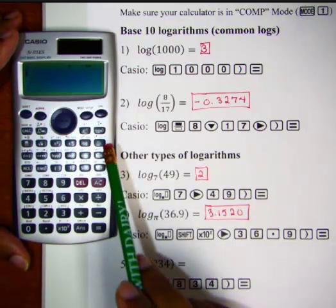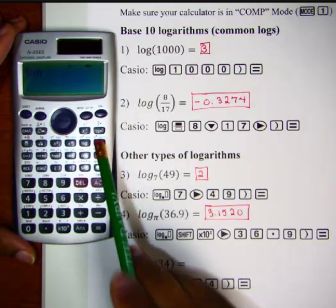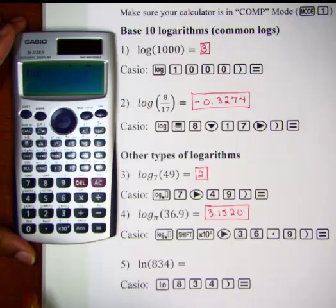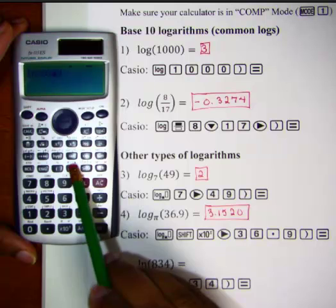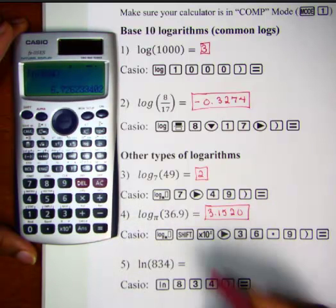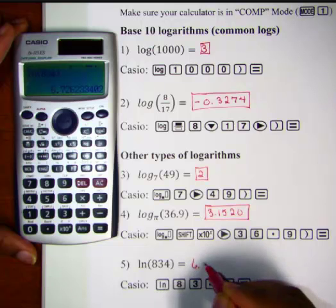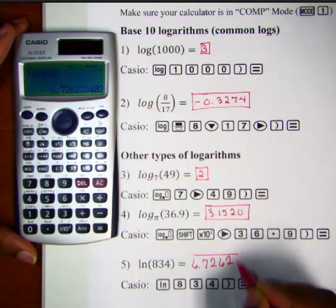So we select natural log, and we enter in 834, close parenthesis, equals, and we get 6.7262. We'll see you later.